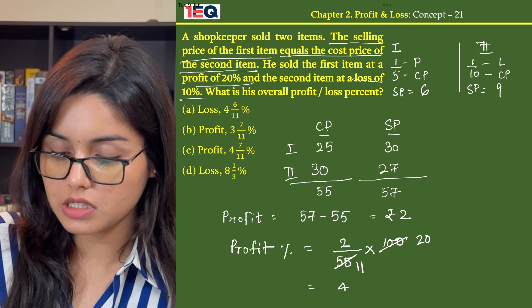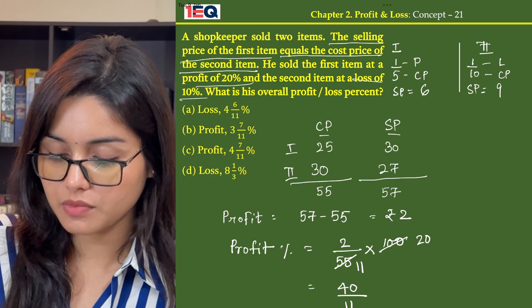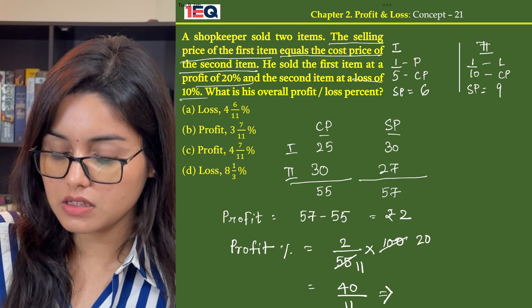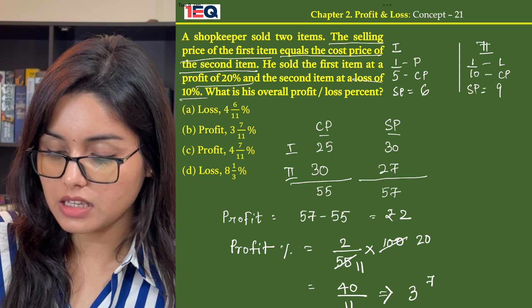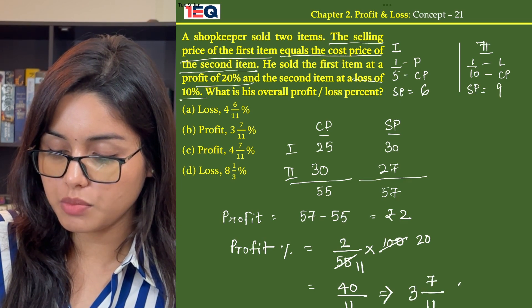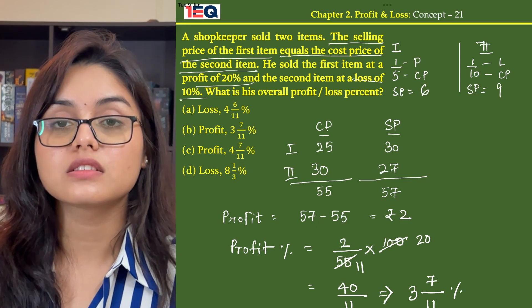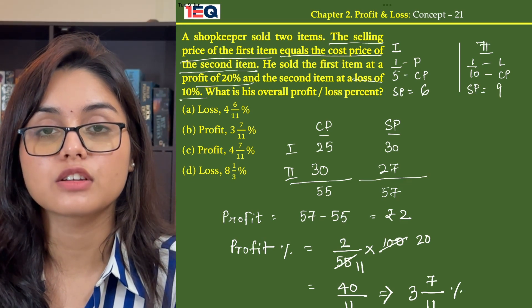So this becomes 40 by 11, which further gives us 3, 7 by 11 percent. So our answer is 3, 7 by 11 percent of profit, which is option B.